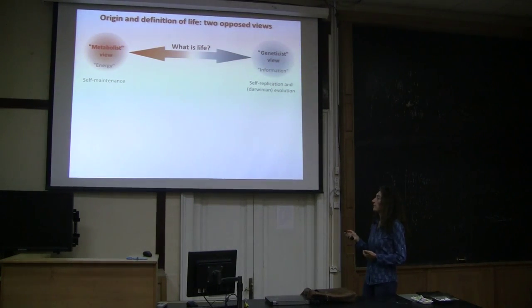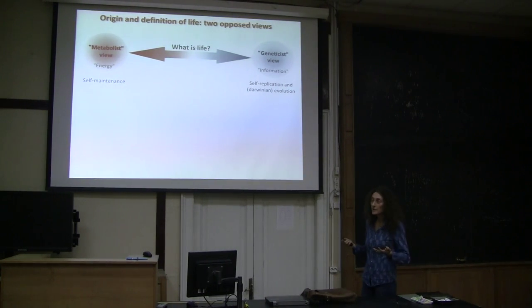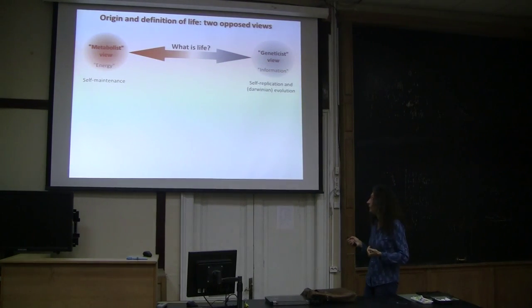On the other hand, we would have views that we could call geneticist, and those views would please very much biologists, especially molecular biologists and today's biologists, because the key word here is information, like the information that you store in genomes that you can analyze by analyzing sequences. And here, for these views, the important property of life is self-replication and evolution, the capacity to evolve.